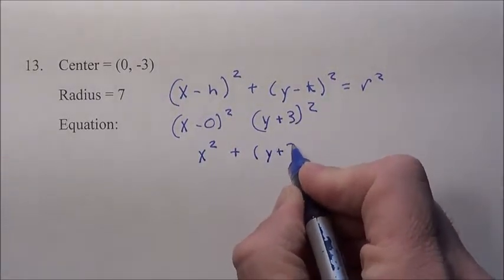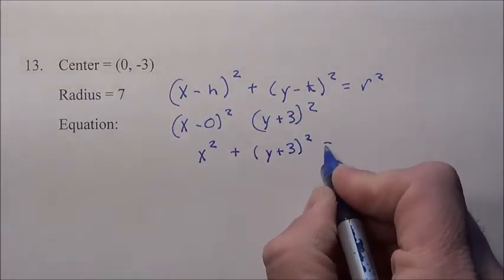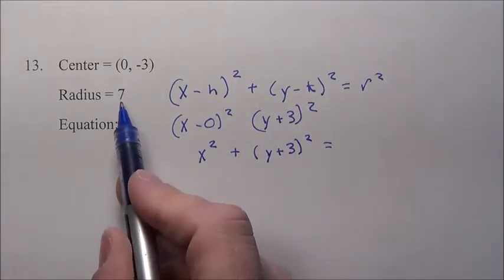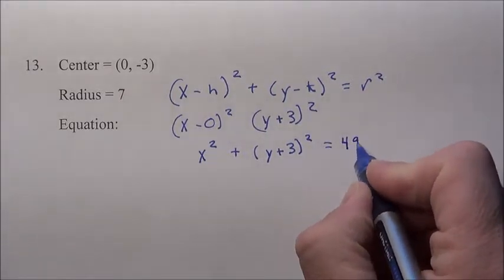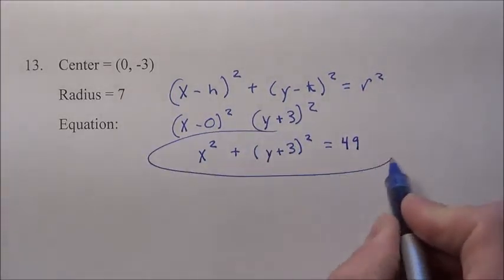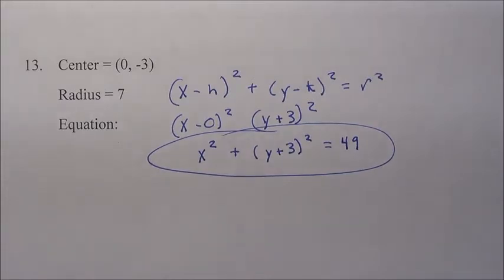So we're going to have down here y plus 3 squared. The radius value squared with the radius of 7, 7 times 7, 49. Here is our equation to that problem.